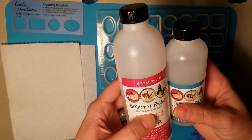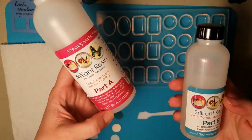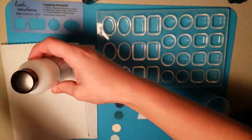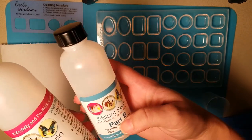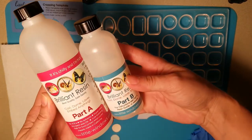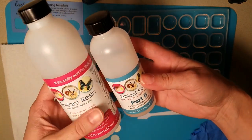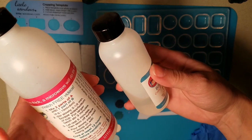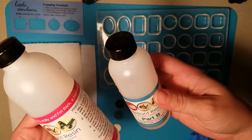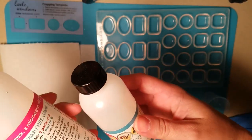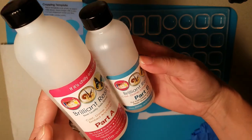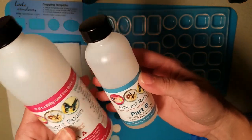Brilliant Resin. This is from little-windows.com. I really do like this product. It is a part A, part B, but the different thing about this kind of resin is that it is actually two parts A to one part B, so it's something you may have to get used to if you're using one to one ratio because this is a two to one ratio resin, but I really like it.